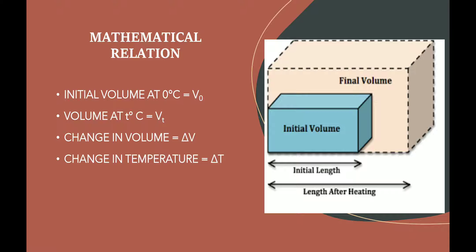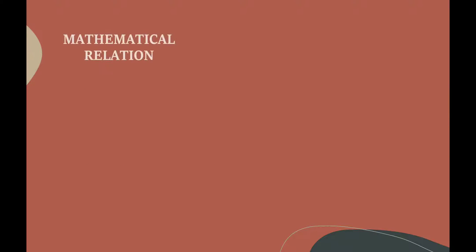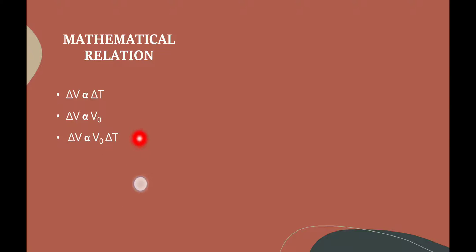The change in temperature will be T minus 0, written as delta T. When we combine the factors affecting expansion, we find that expansion is directly proportional to the change in temperature — the greater the rise in temperature, the more will be the cubical expansion. The greater the initial volume of the solid block, the more will be the expansion. So on combining both factors: delta V is directly proportional to V0 × delta T. Removing the proportionality sign, we introduce a constant known as the coefficient of cubical expansion, denoted by gamma.